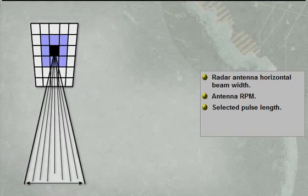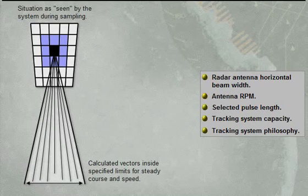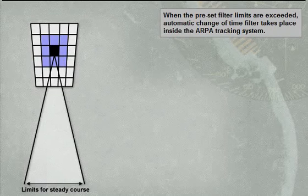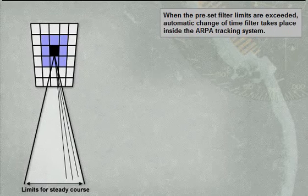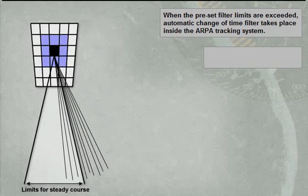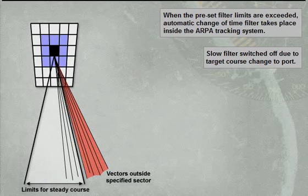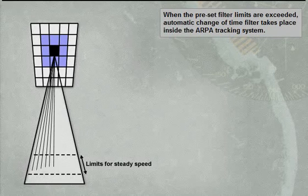The limits must be accepted by the existing system. The actual limits depend on many factors, such as radial beam widths, antenna rotation rate, selected system capacity, etc. When a certain percentage of target movement falls inside the specified limits, the steady filter is automatically switched, while the manoeuvring filter is activated. This means faster updating of display information. When the preset filter threshold is reached, an automatic filter change takes place inside the ARPA system.